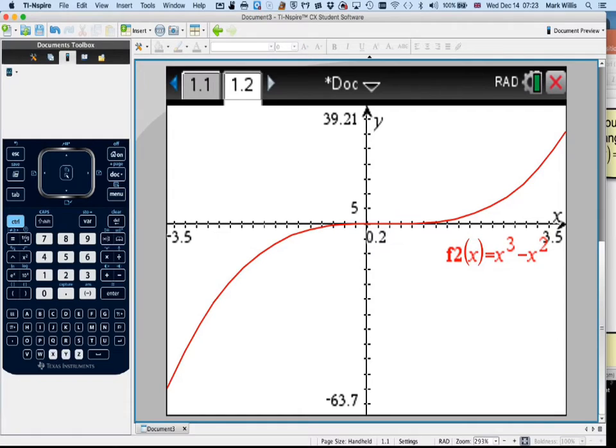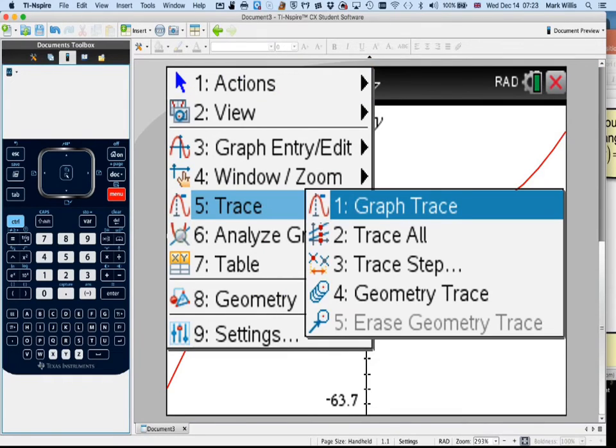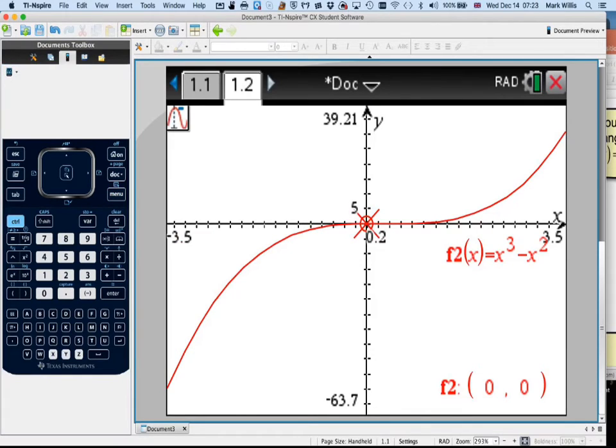Right. Now, in order to find what happens at -3 and 3, I'm going to go to menu, number 5, trace, and go to graph trace. And then I'm going to move the arrow key to that point there. And take note there that the y value is -36.